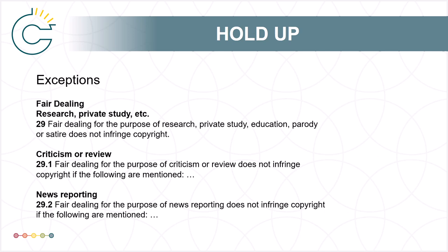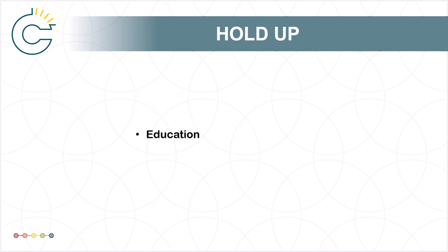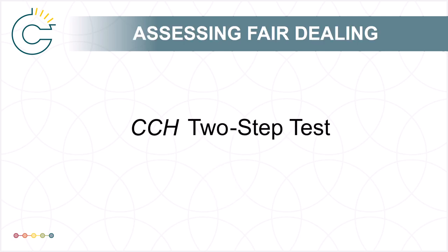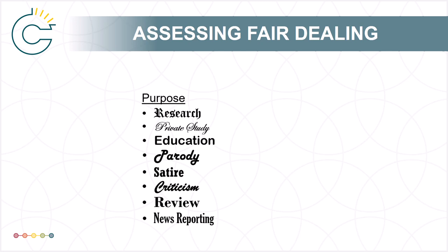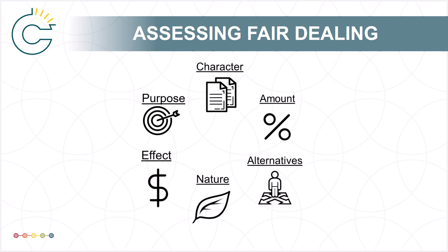That is the text of the section, but there is a whole lot more to Fair Dealing that can't be deciphered from the Act alone. Just because someone is using a work for the purposes of research, private study, education, or one of the other categories, it doesn't mean that they can do whatever they want. How the user is dealing with the work has to be fair. In that same CCH decision, the court carefully detailed how Fair Dealing is assessed using a two-step test. For a dealing to be fair, first it must meet one of the Fair Dealing categories in the Act. The court then outlined a second step, which involves six factors for determining the fairness of a dealing.